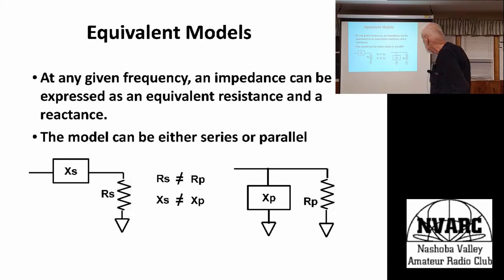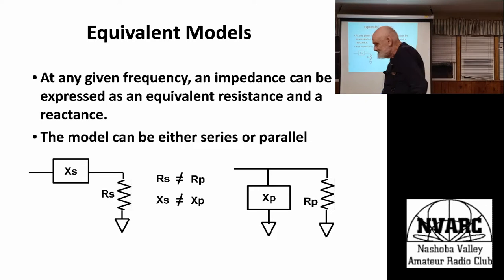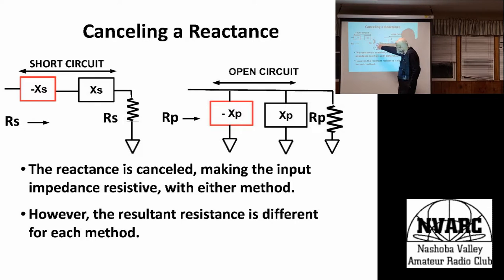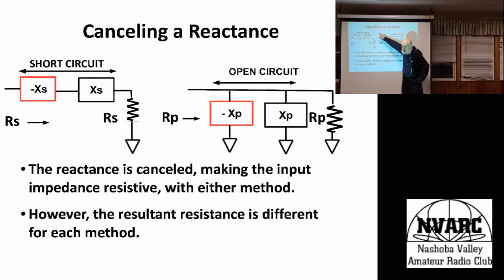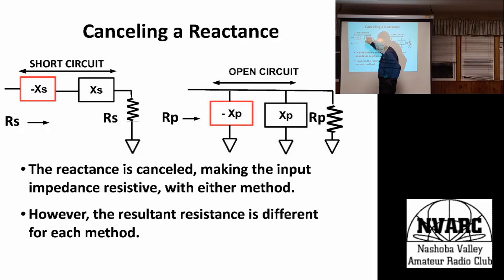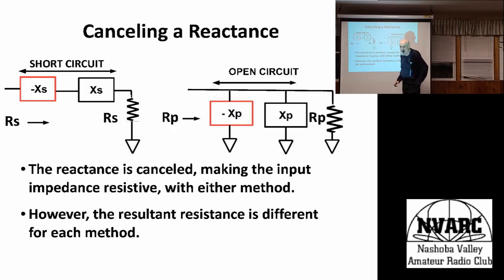At resonance you just have a short, so you wind up with whatever the resistive load is. One thing you're going to need to do is get that power into a resistance — you can't put power into a reactance. So if you have a load with a series reactance and you put a reactance of the exact opposite value, that part becomes a short circuit and the impedance looking in is completely resistive, equal to the series resistance RS.